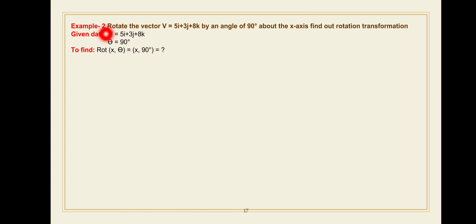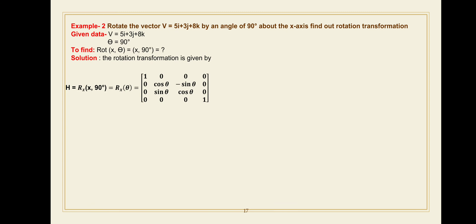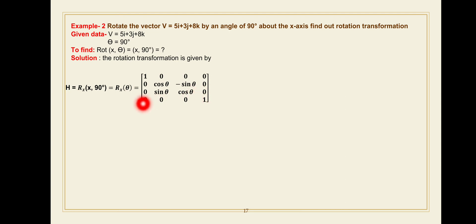The formula for rotation about the x-axis at an angle theta was discussed in the previous lecture. In the solution, the rotation transformation is given by H equals R(x-axis, theta). The matrix is: [1 0 0 0 / 0 cos-theta minus-sin-theta 0 / 0 sin-theta cos-theta 0 / 0 0 0 1]. Now put the value of theta equals 90 degrees into this equation.